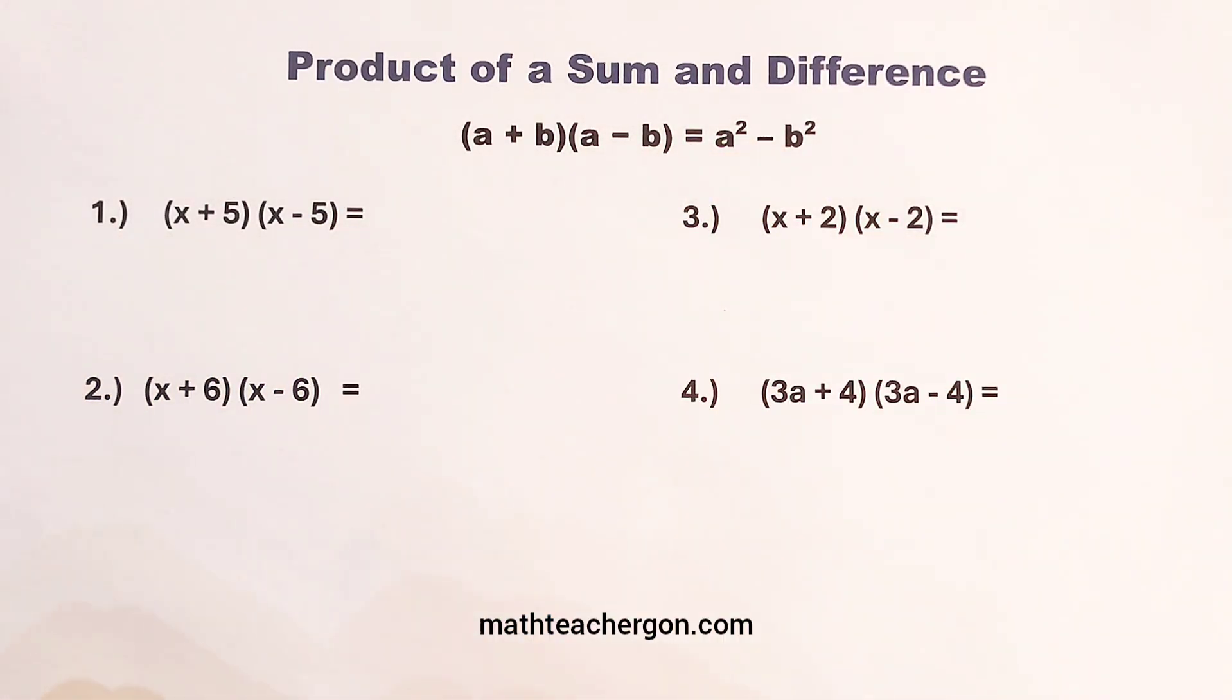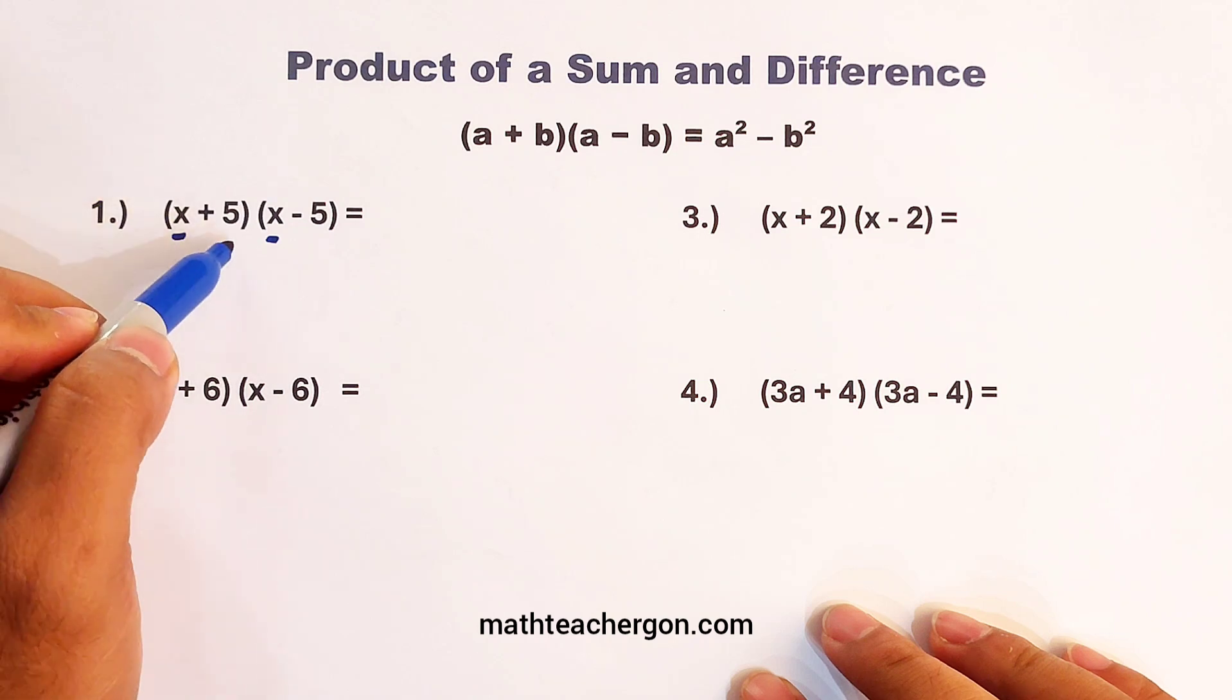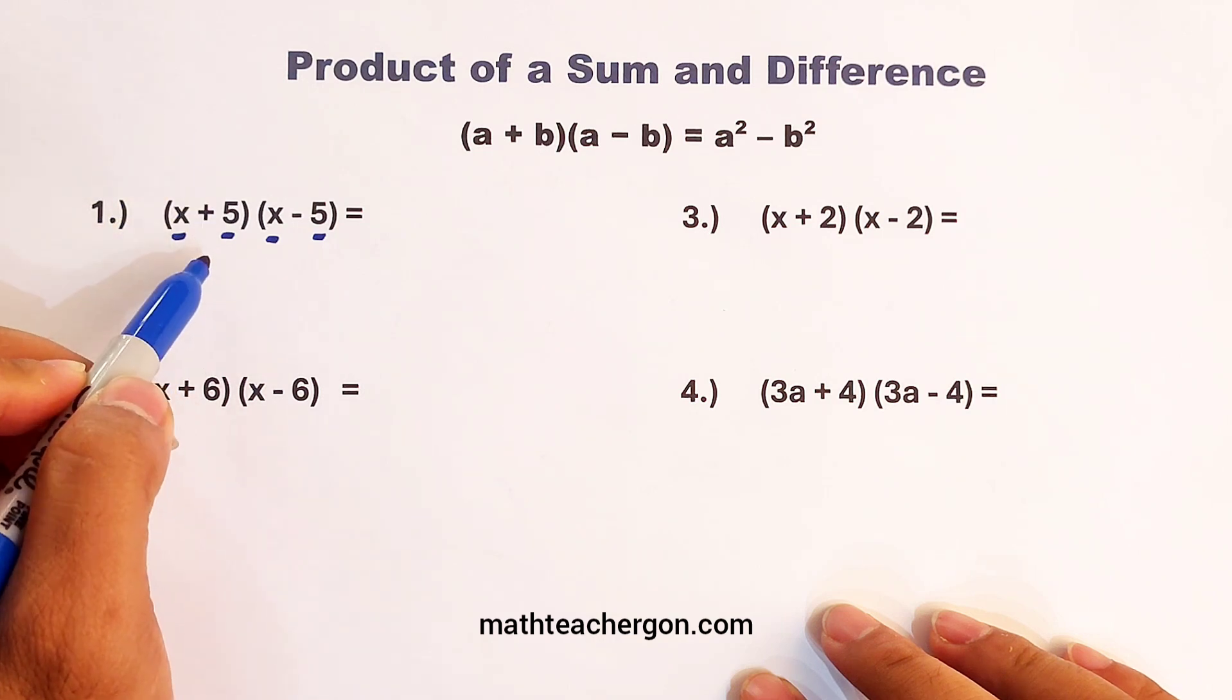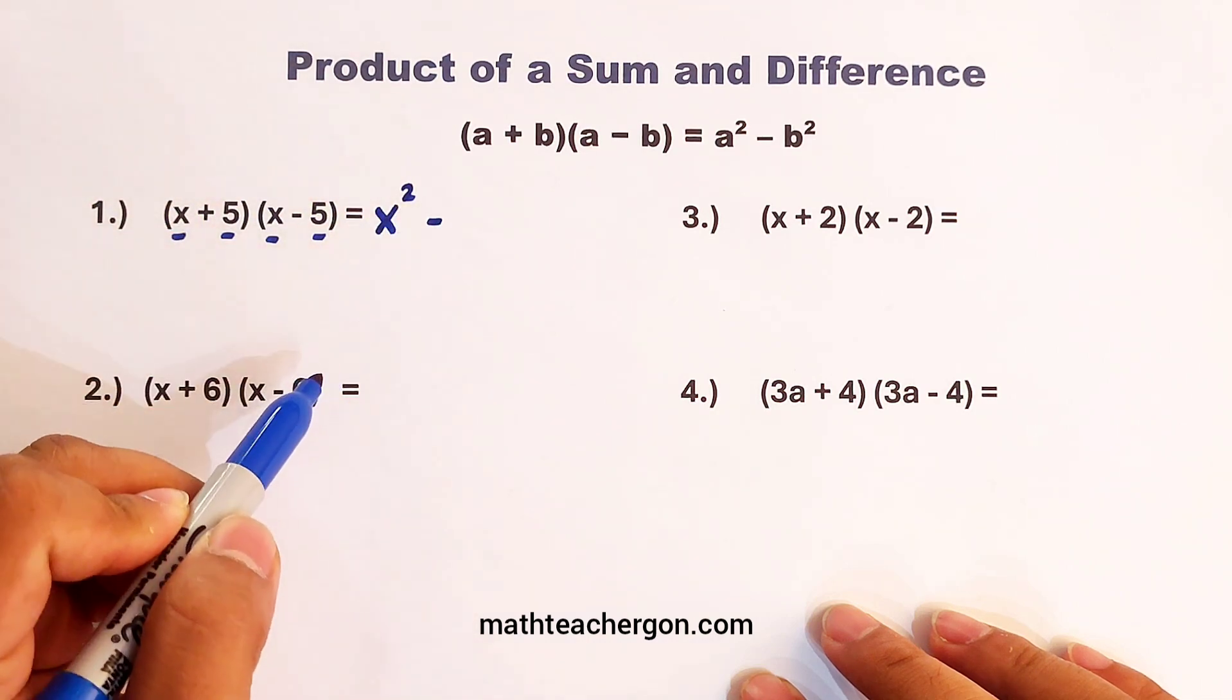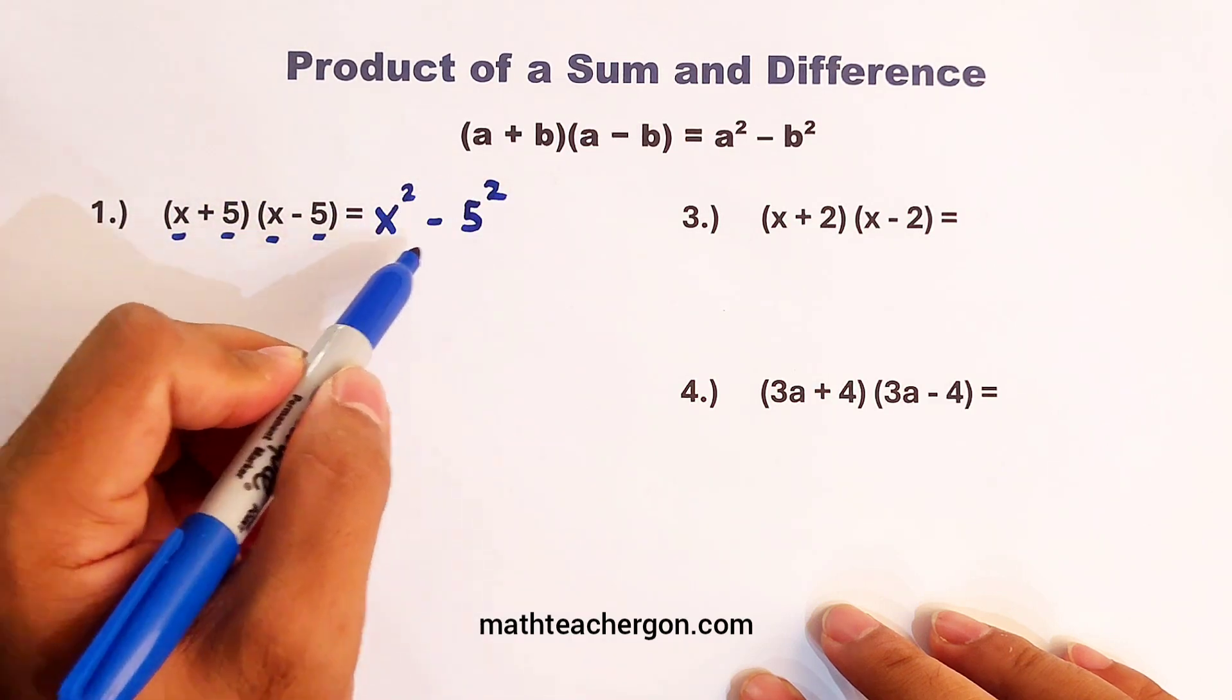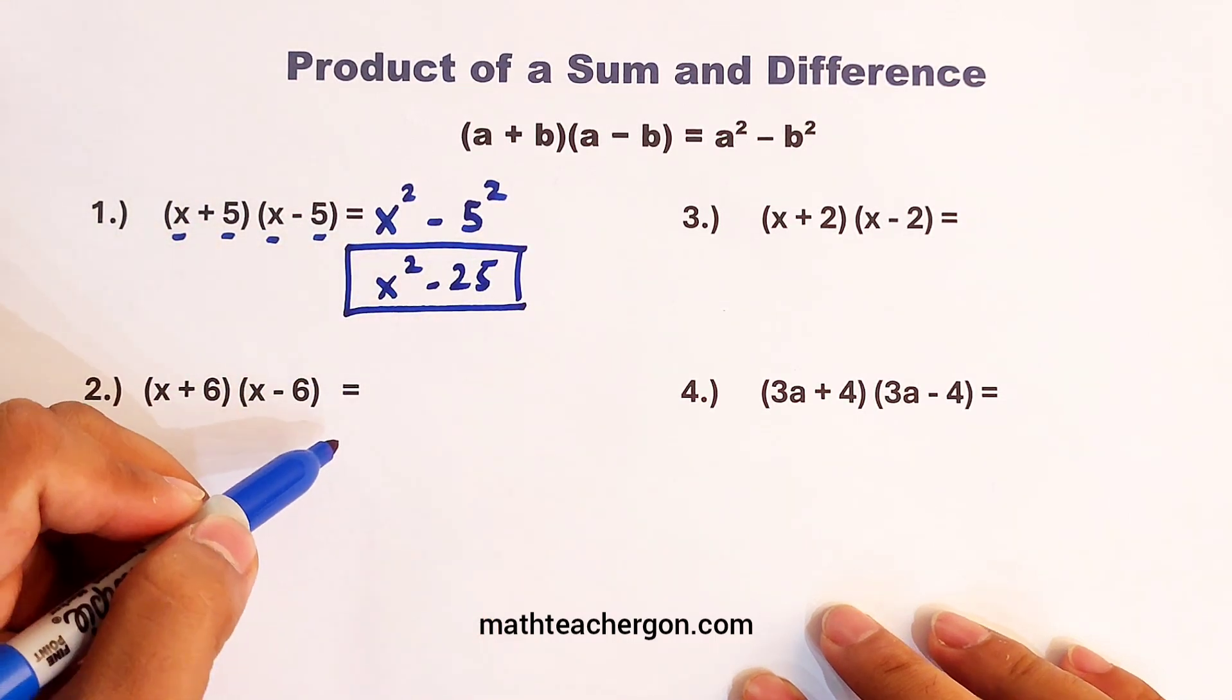Let's have item number one. In number one, we are given x plus 5 times x minus 5. When you notice, the first terms are the same and the second terms are the same. It has the plus and the minus. So how do we get the answer for this? Get the first term, square it, put a minus sign here, a subtraction sign, get the second term, square it, simplify. This is x squared minus 25. And as you can see, this is the answer.